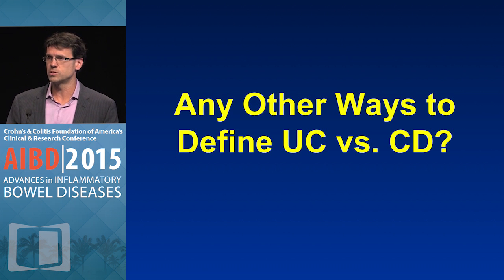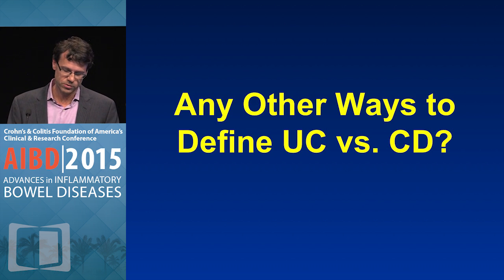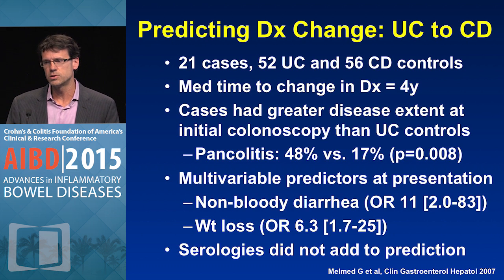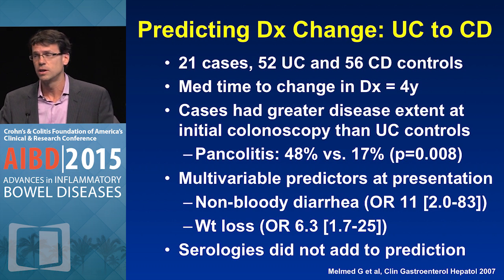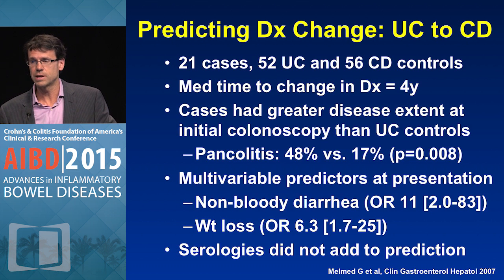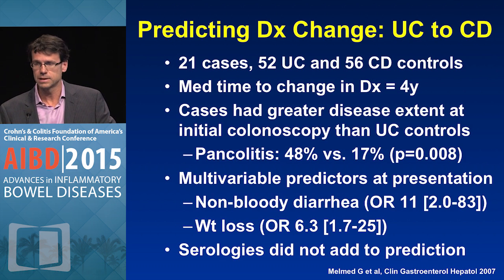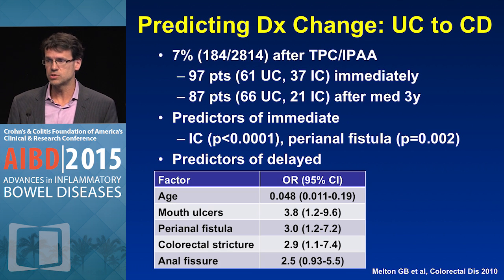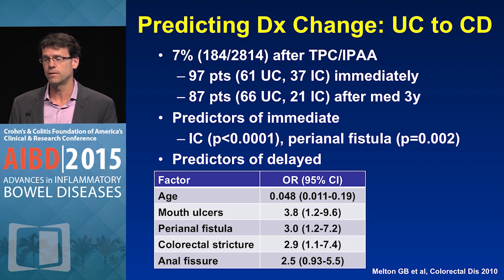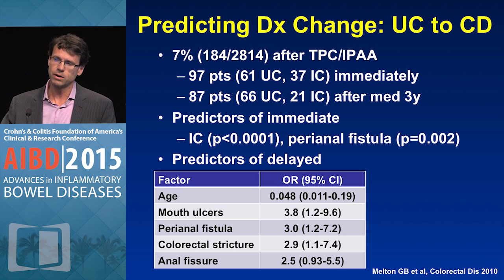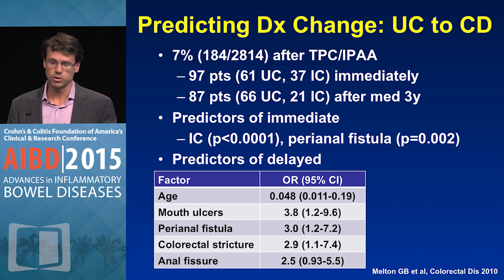In just the last few minutes, are there any other diagnostic things that can help define if someone has Crohn's versus UC? In a study from Cedars-Sinai of patients whose diagnosis changed from ulcerative colitis to Crohn's, patients whose diagnosis changed were more likely to have pancolitis and more likely to have non-bloody diarrhea or weight loss. In colectomy series, predictors of an immediate diagnosis change included having indeterminate colitis or a perianal fistula, while predictors of a later Crohn's diagnosis included younger age, mouth ulcers, perianal fistula or fissure, or a colorectal stricture.